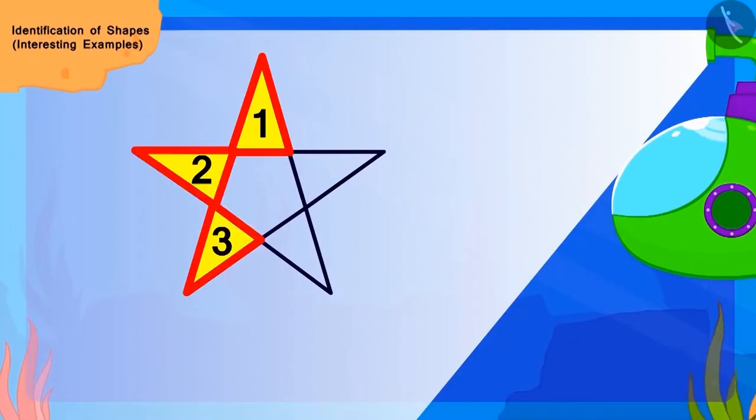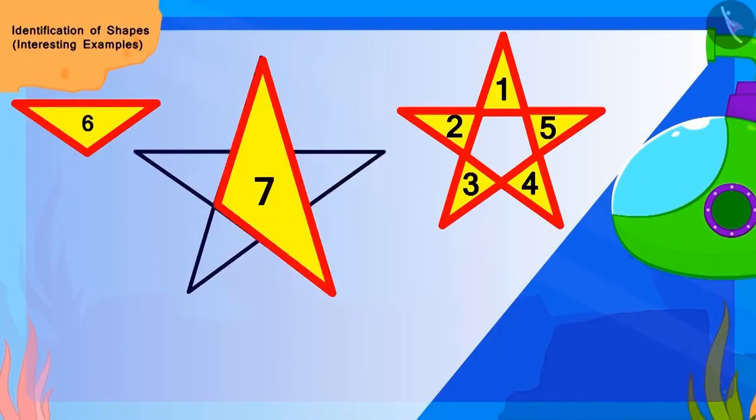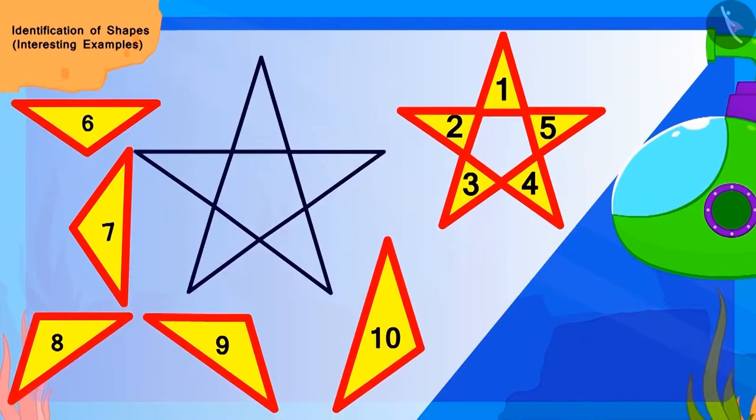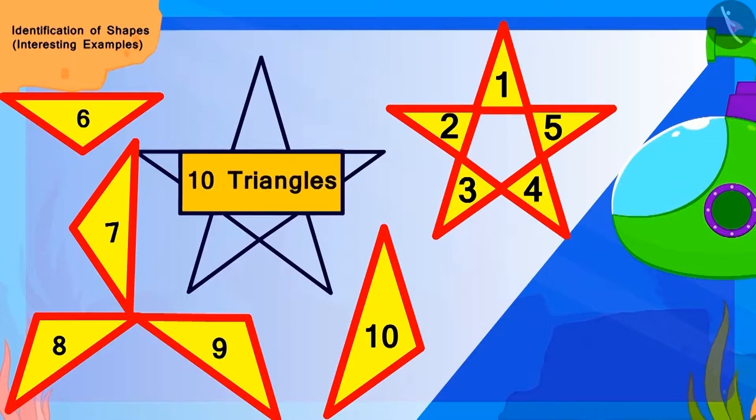Children, to find out how many triangles are there in this pattern made on the box, we will find out this way. Yes, there are a total of 10 triangles here.